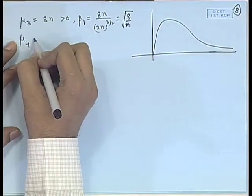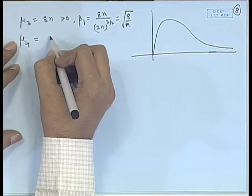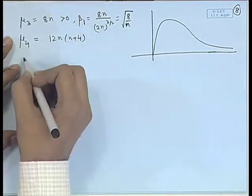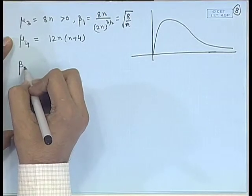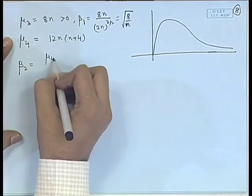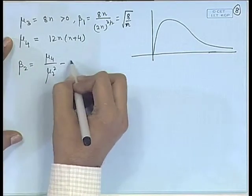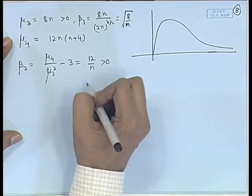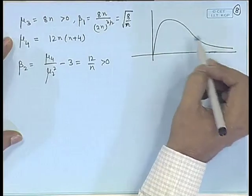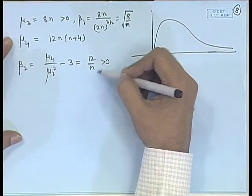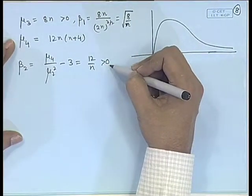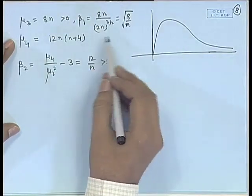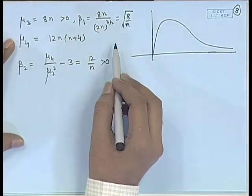Similarly, μ₄ = 12n(n+4), and the measure of kurtosis is μ₄/μ₂² − 3, which equals 12/n. So it is positive, meaning the peak is higher than the normal, but as n becomes large this is approximately normal.